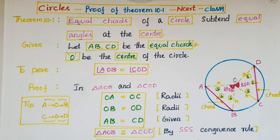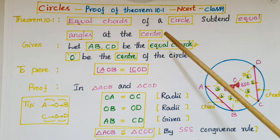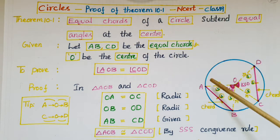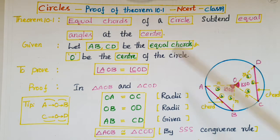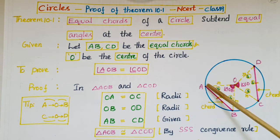Hello everyone, today I am going to tell the proof of Theorem 10.1 from NCERT Class 9. The theorem is: equal chords of a circle subtend equal angles at the center. We know that a chord is a line segment joining any two points on the circle. Let AB and CD be the equal chords.